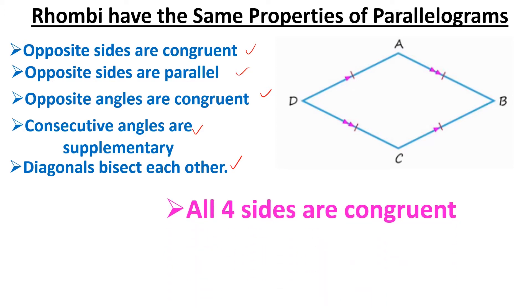As we can see, we have the congruence marks showing all four sides are congruent. I like to think of a rhombus as a slanted square, because we know a square has all equal sides and a rhombus also has equal sides.